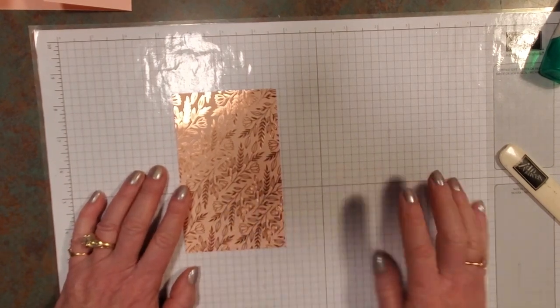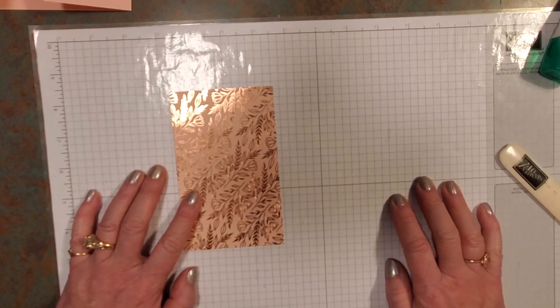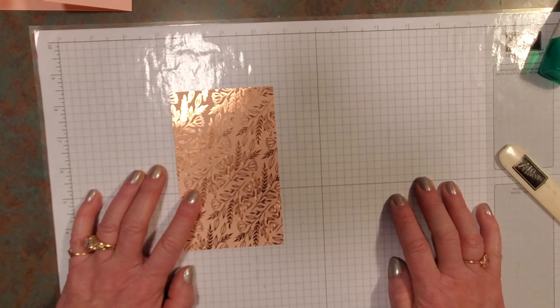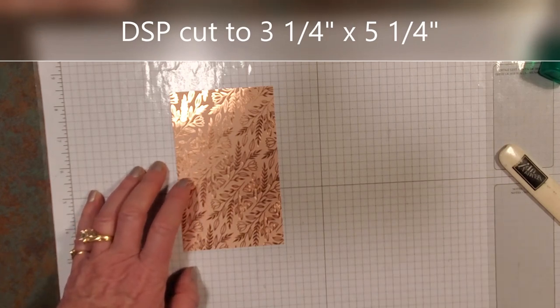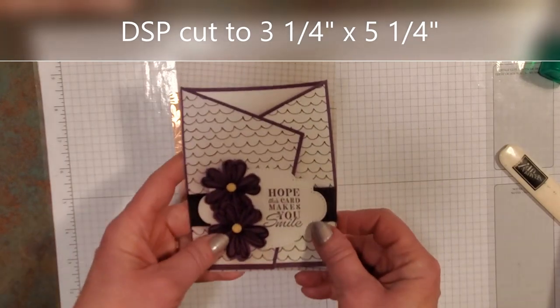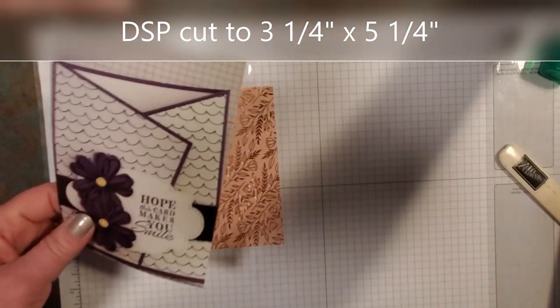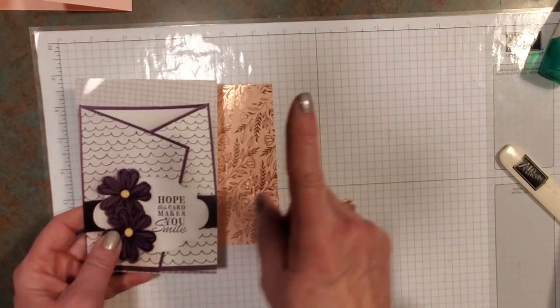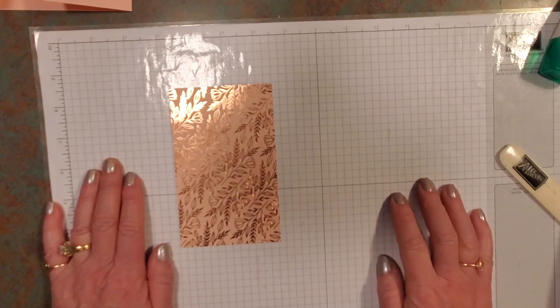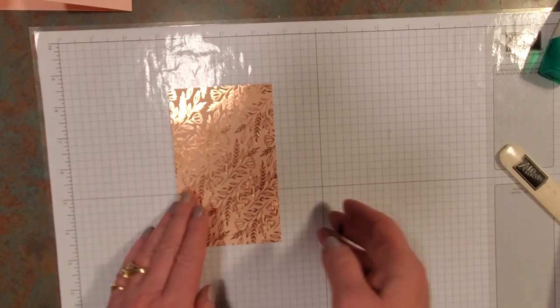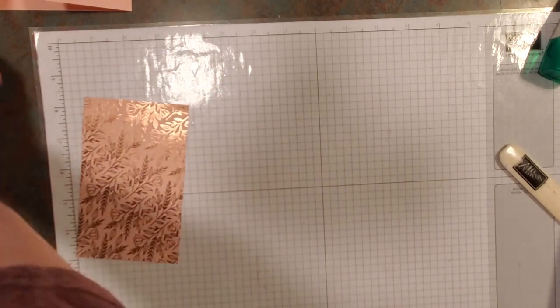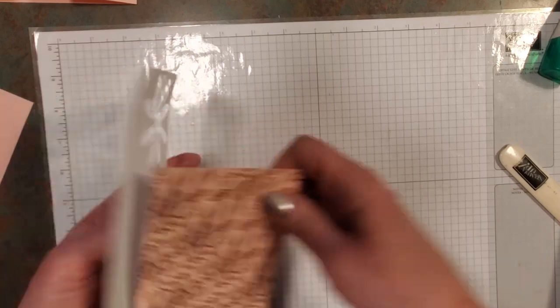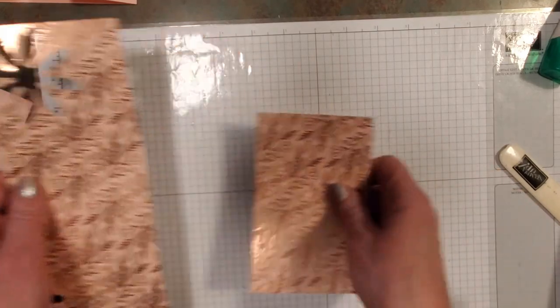Do you have an eraser? Like a white eraser? I left my little mark there, which we can always take off. Can't live without the white eraser. They are the best. So this piece of any DSP that you want to use is going to be cut at 5 1/4 by 3 1/4. And you know what, Amy? I am going to have to show that picture.